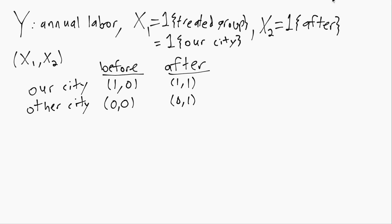So there's sort of these four possibilities where every individual is in one of these four groups.